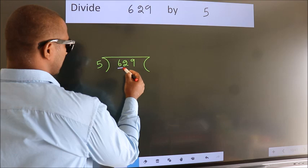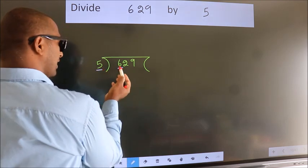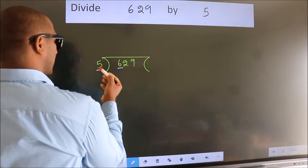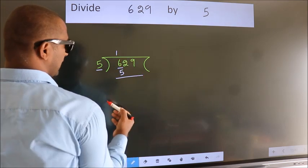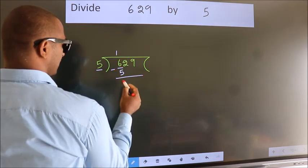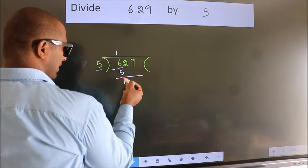Here we have 6, here 5. A number close to 6 in 5 table is 5 once 5. Now, we should subtract. We get 1. After this,